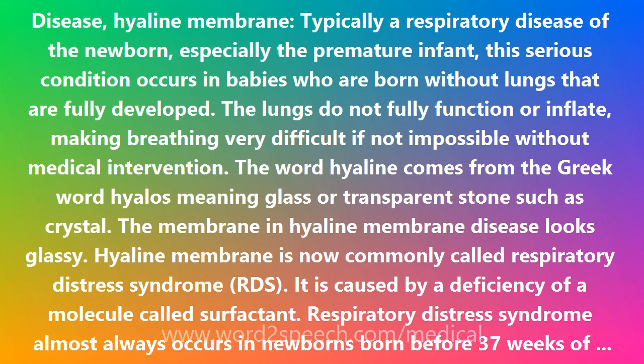Lung compliance is decreased, and the work of inflating the stiff lungs is increased. The preterm newborn is further handicapped because his or her ribs are more easily deformed and compliant. Breathing efforts therefore result in deep sternal — breastbone — retractions but poor air entry if the ribs are compliant compared with the lungs. This results in diffuse atelectasis, or collapse of the lungs.